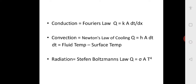For convection, Newton's law of cooling states Q = H × A × ΔT, where H is the convective heat transfer coefficient, A is the area, and ΔT is the temperature difference between the fluid and the surface. For conduction, Fourier's law gives Q = −kA(dT/dx). For radiation, Stefan-Boltzmann law gives Q = σ × A × T⁴, where σ is the Stefan-Boltzmann constant.